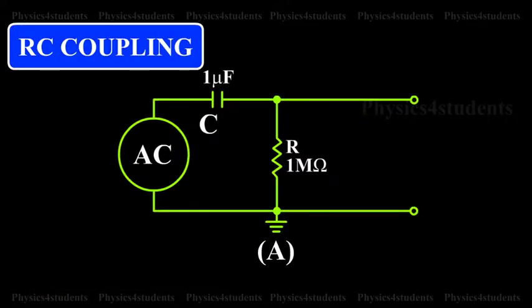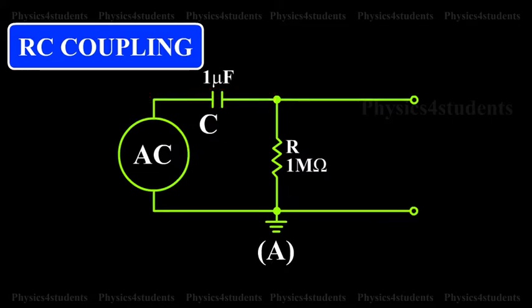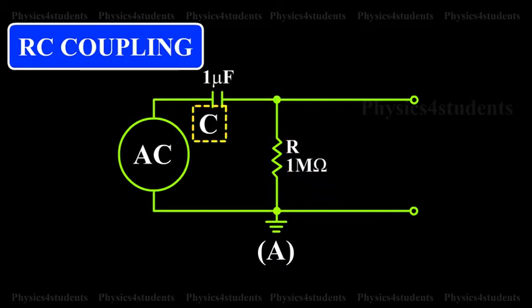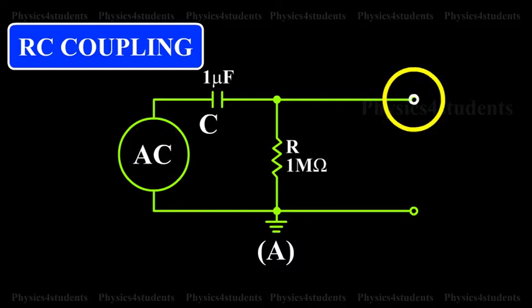RC Coupling scheme consists of a series capacitor C and a parallel resistor R. C acts as a short circuit for AC signals, while it behaves like an open circuit for DC signals.